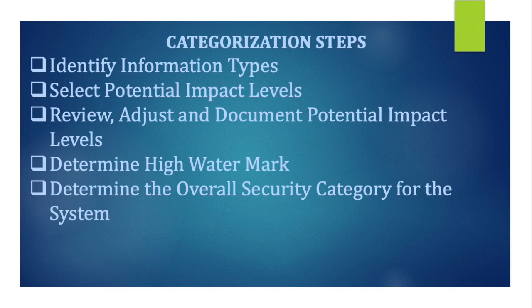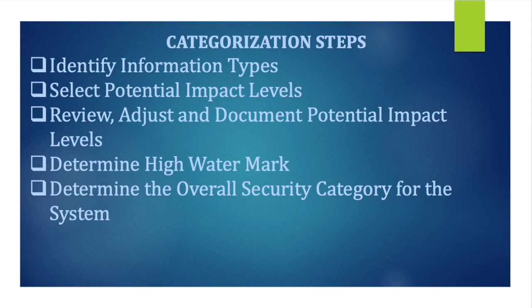Now for the categorization steps — how do you categorize? Step one: identify information types. Information types means the information being processed, stored, transmitted, or shared in the system. Information type is what makes the system important, usable, and critical. Examples include social security number, date of birth, medical information, insurance information, house address, account information, and bank statements.